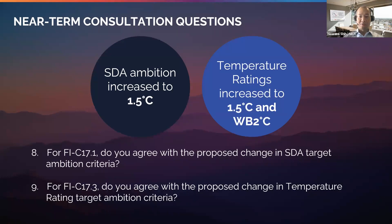The next two consultation survey questions ask if you agree with the following two criteria changes. Similar to the previous change, we are proposing to increase the minimum ambition of SDA scope 3 category 15 targets to 1.5°C where available. When a 1.5°C pathway for a sector is not available, a well below 2°C pathway may be used instead. The fourth proposed change is the minimum ambition of temperature rating targets from well below 2°C to 1.5°C for portfolio scope 1 and 2 temperature scores, and from 2°C to well below 2°C for portfolio scope 1, 2, and 3 temperature scores. These changes push for more ambitious targets in line with the temperature goals of the Paris Agreement.